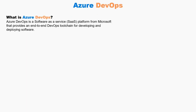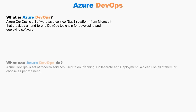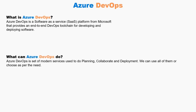Azure DevOps is a Software as a Service platform from Microsoft. We can use Azure DevOps to implement the DevOps lifecycle in a business. Azure DevOps services support application teams to plan work, collaborate on code, and build and deploy applications. Before we look at Azure DevOps services, let me quickly walk through the high-level development lifecycle of any project.